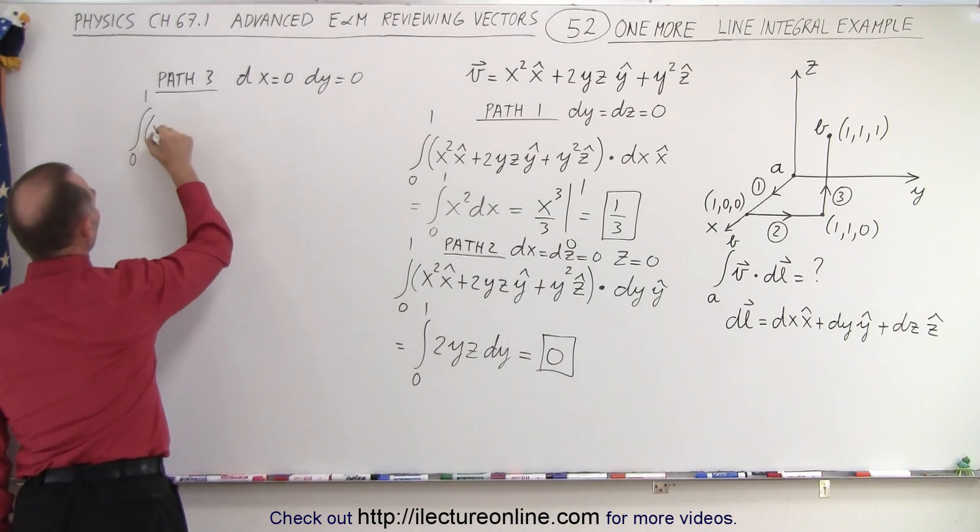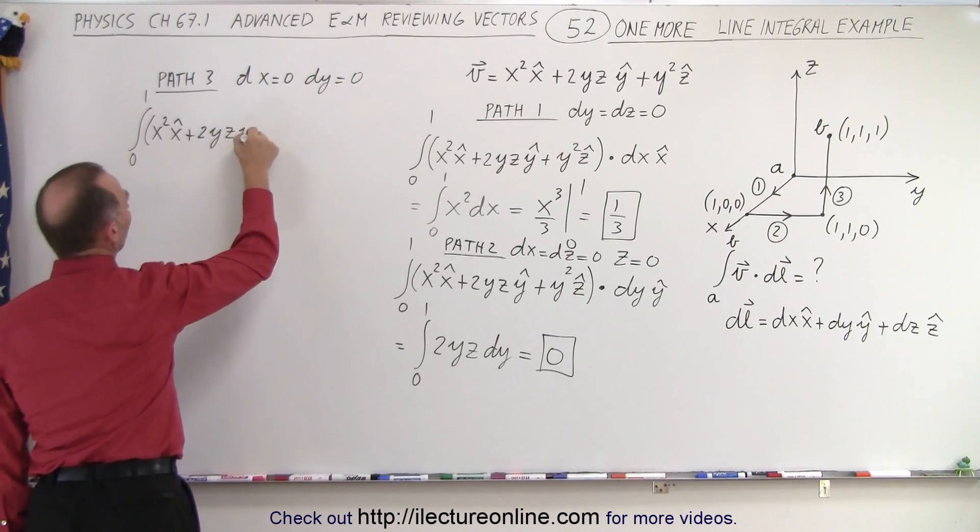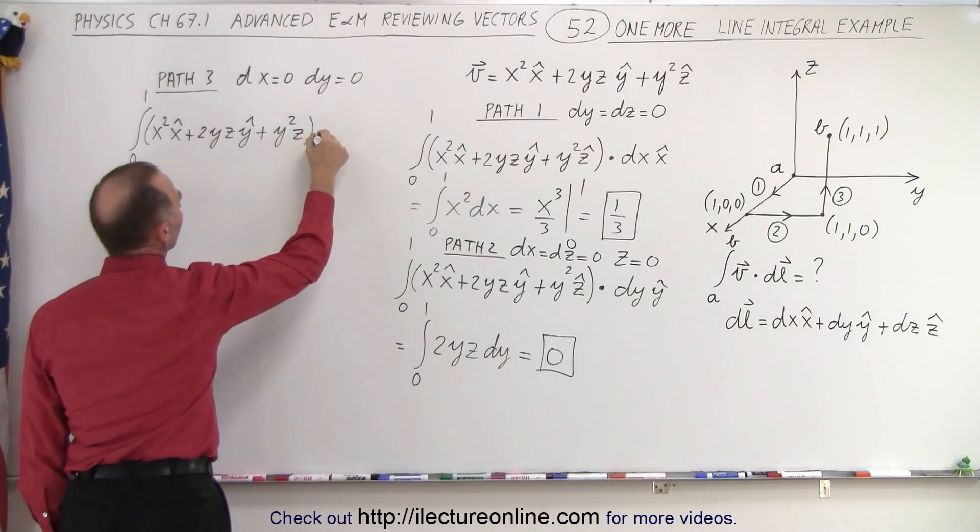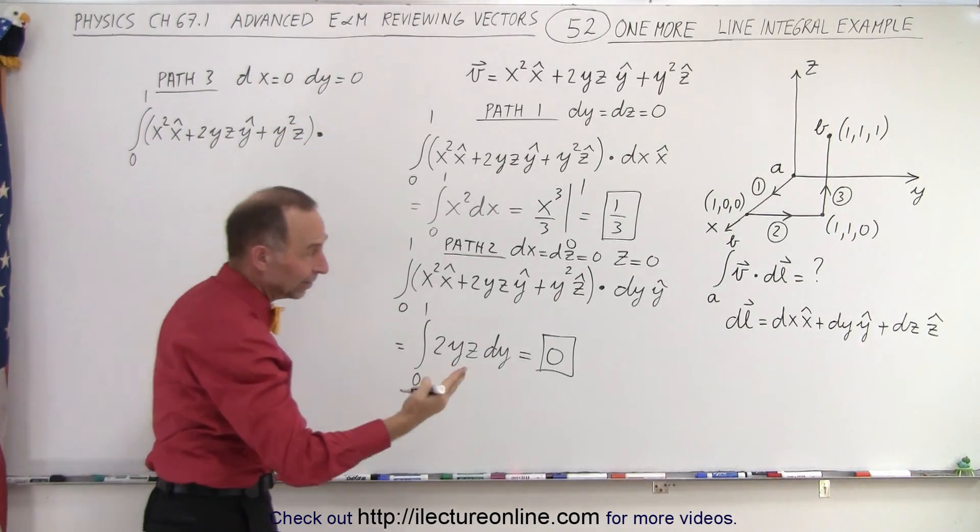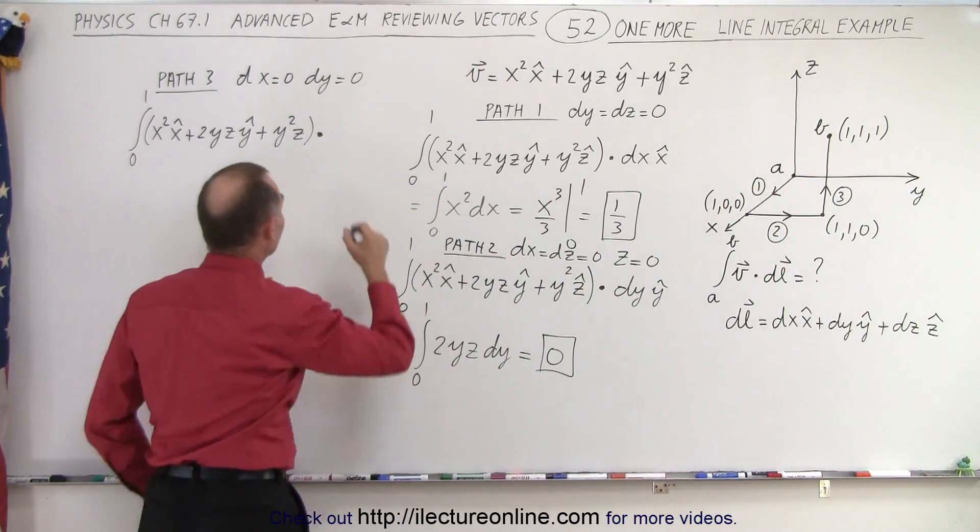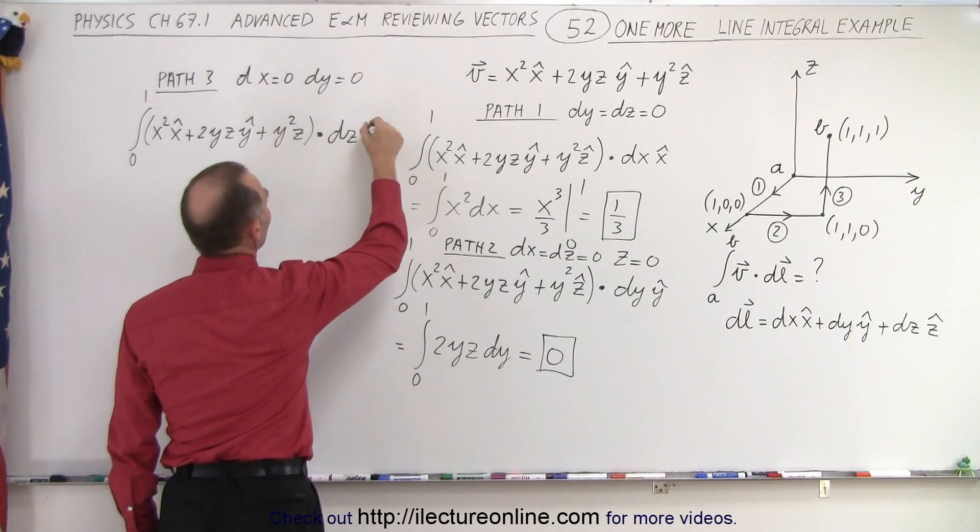So we have x squared in the x-direction plus 2yz in the y-direction plus y squared in the z-direction, dot product times dl. But in this case only dz in the z-direction will survive because we're only changing direction in the z-direction. So only the z-term survives.